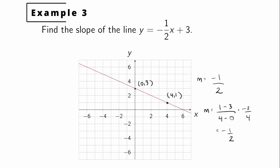Finally, if the line is written in slope-intercept form — y equals mx plus b, where you have a constant times x plus another constant — then the coefficient of x is the slope. Here, y equals negative one half x plus three, so negative one half is the slope. If the line is already written in that form, you can tell by looking at it what the slope is.